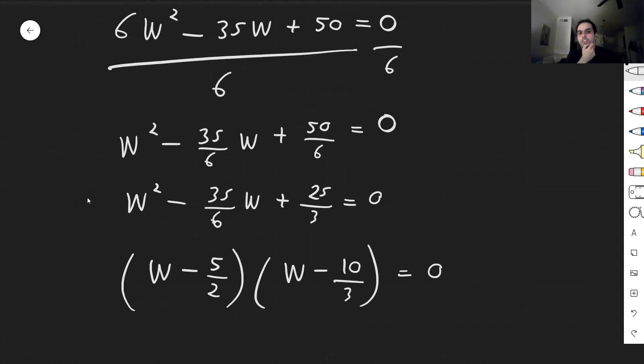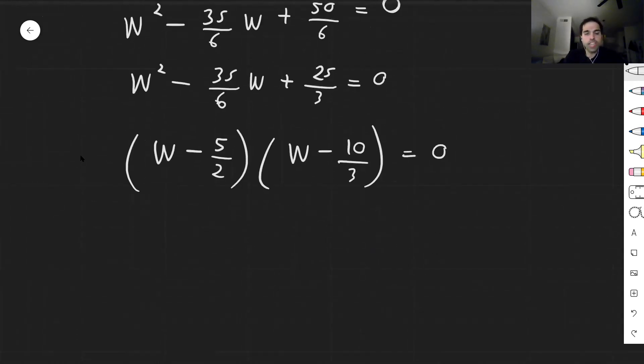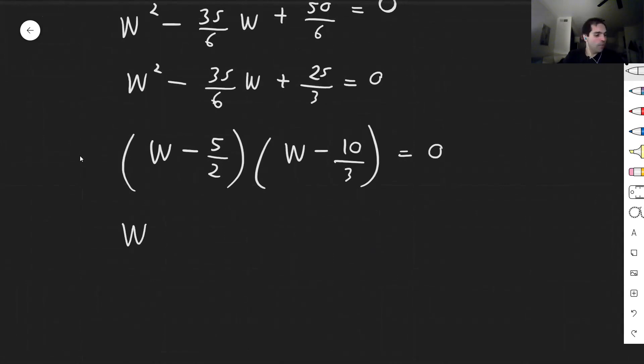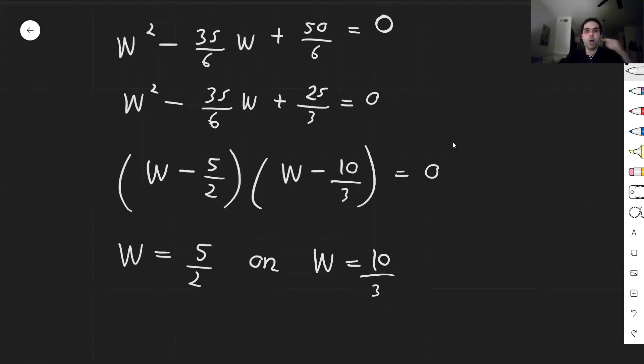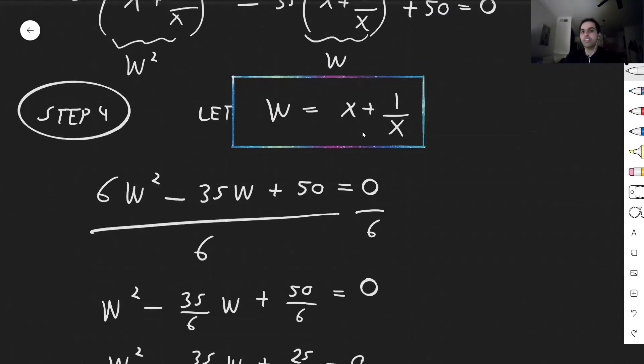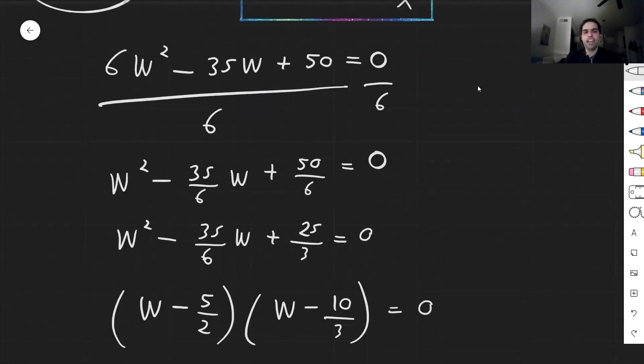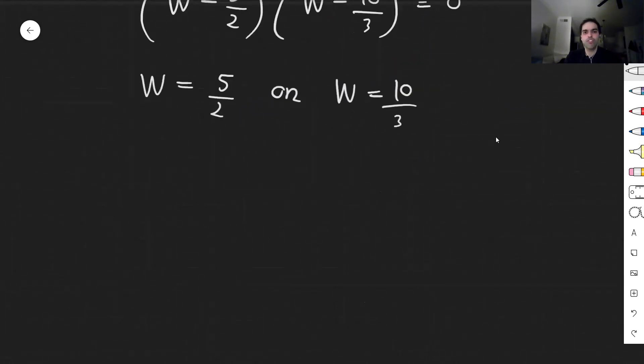And in fact, the product becomes 50 over 6, which is 25 thirds, which tells you that w is either 5 halves or w equals 10 thirds. But what is w? w is x plus 1 over x. And that allows us to solve for x.